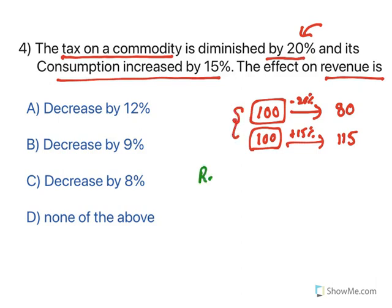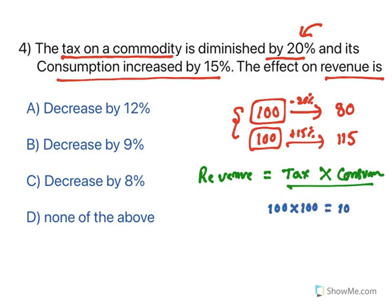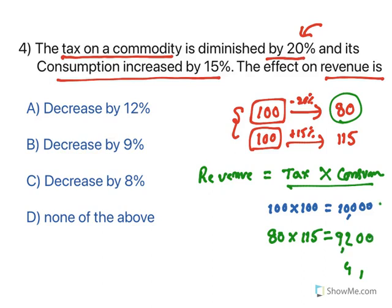Now what is being asked? We need to find the change in revenue. Revenue depends on tax multiplied by consumption. Initially, with no changes, take tax as 100 and consumption as 100, so revenue is 10,000. Now with the changes, tax has become 80 and consumption has become 115. So the new revenue is 80 multiplied by 115, which gives 9,200.